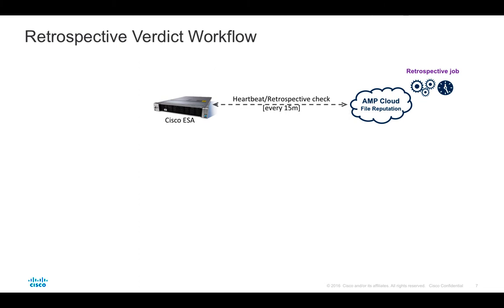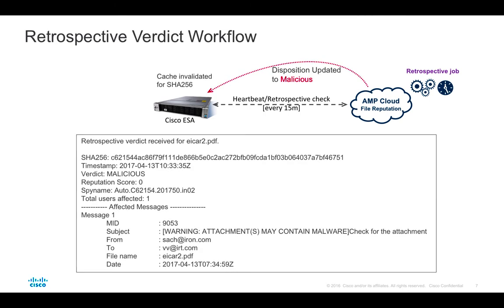File verdicts can change as new information emerges. The AMP cloud can change a disposition based on Talos analysis or ThreatGrid analysis. Cisco ESA stays in constant contact with the AMP cloud by sending a periodic heartbeat message, which also asks the cloud if there were any changes in dispositions of files that passed through ESA. If a disposition change occurred for a file that went through AMP and ThreatGrid inspection on ESA, the solution alerts the administrator with details including message subject, sender and recipient, file name and hash, and the new disposition. The ESA user guide has a section dedicated to AMP logs which can be helpful for administrators seeking detailed knowledge of how the solution works.